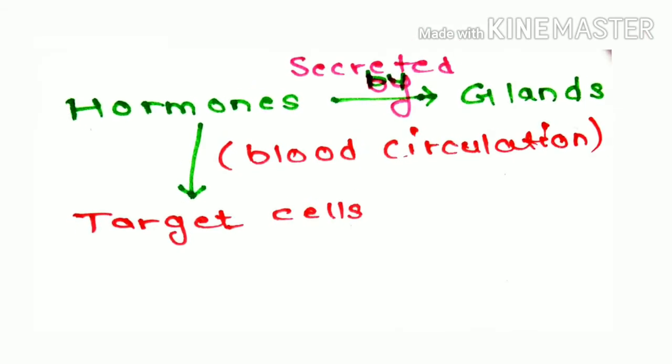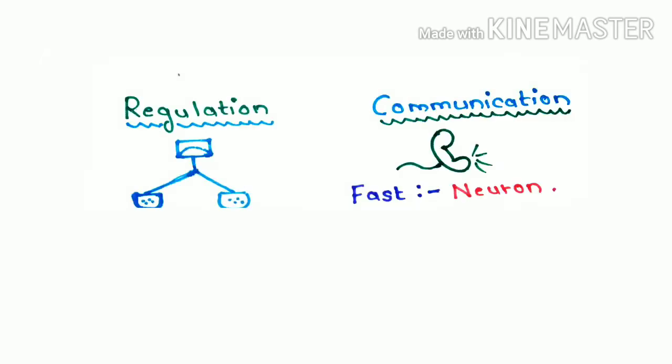Hormones are secreted by specialized endocrine cells and carried through the circulation to act on target cells at distant body sites. Therefore, regulation and communication are important for the normal functioning of the body.